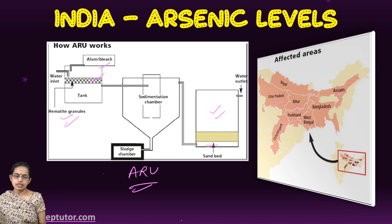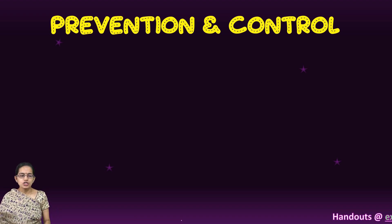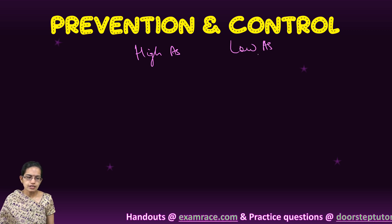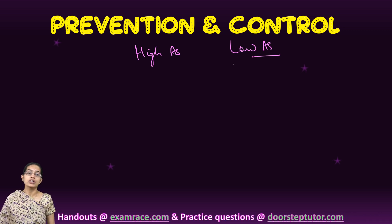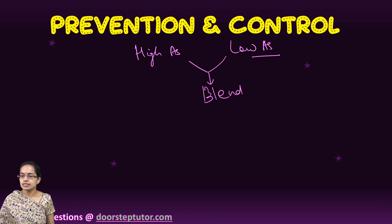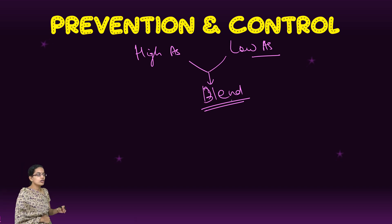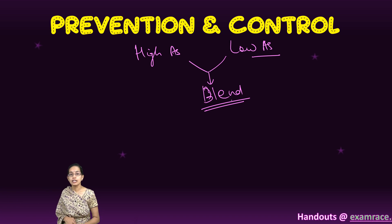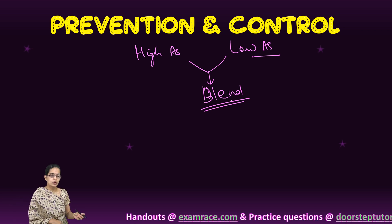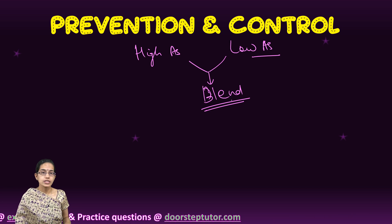For prevention and control, substituting high-arsenic groundwater sources with low-arsenic rainwater or surface water is a good approach. In certain cases, blending high-arsenic and low-arsenic waters is also an option. Arsenic removal systems are an important breakthrough technology. Other methods include oxidation, coagulation, absorption, ion exchange technology, and risk monitoring.